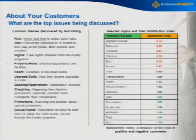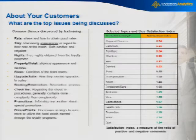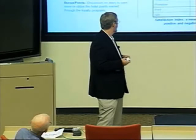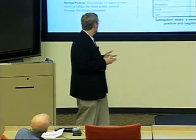Once you have this much data coded using text analytics, there's a lot you can do. The first step is understanding the top verbatim issues being discussed and linking them to sentiment. Payment, process, bathroom, and furniture tend to be discussed more negatively. Transportation, food, and room are more neutral. Spa, points programs, promotions, and health club tend to be discussed more positively.